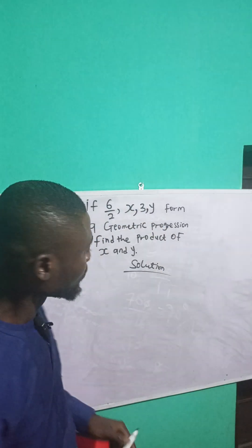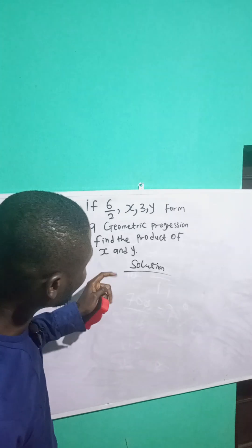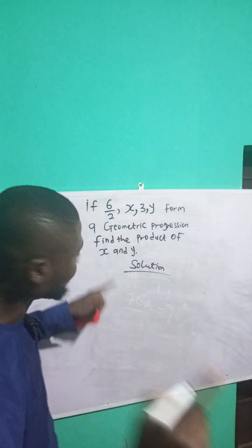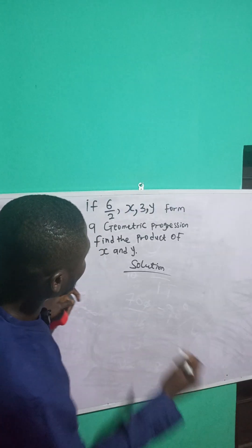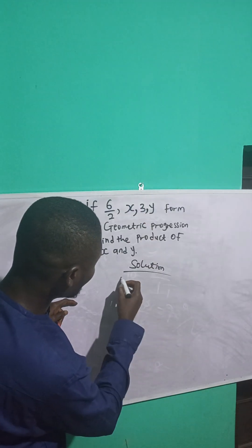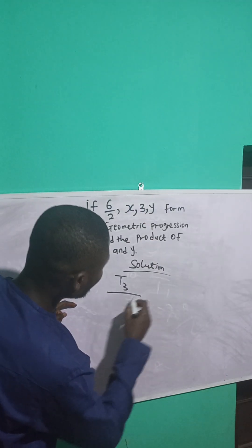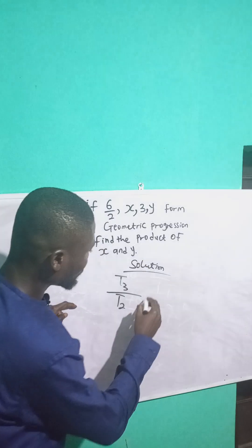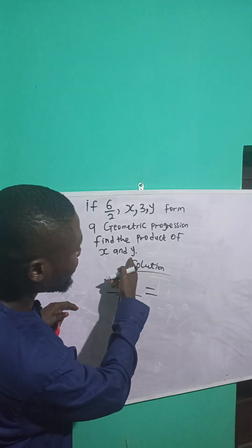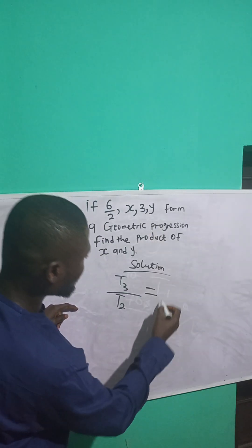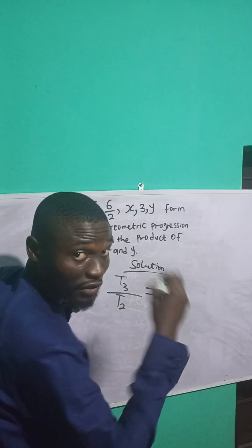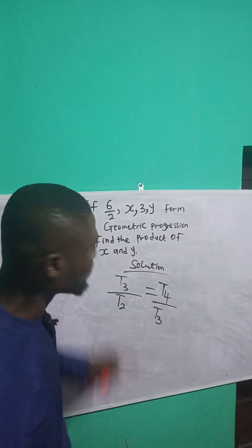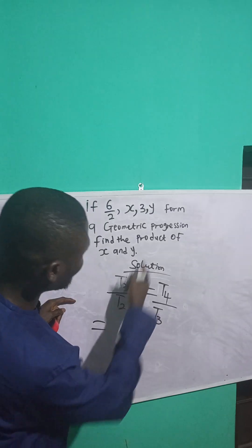We are asked to find the value of x and y. Since we're looking for the product of x and y, it will be the third term (t3) over the second term (t2), equal to the fourth term (t4) over the third term (t3).